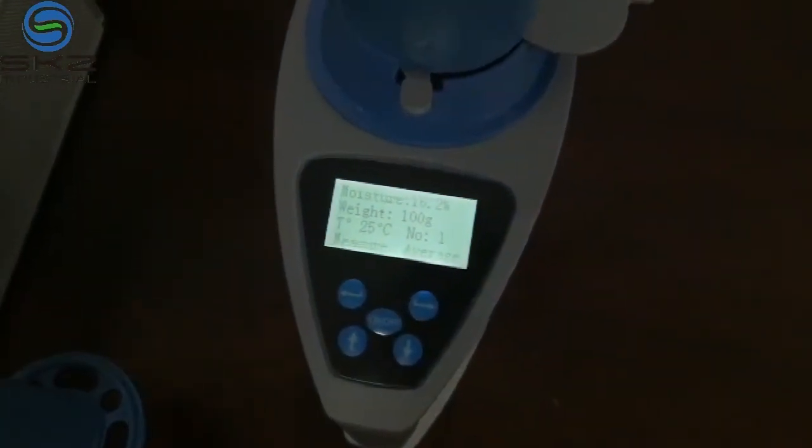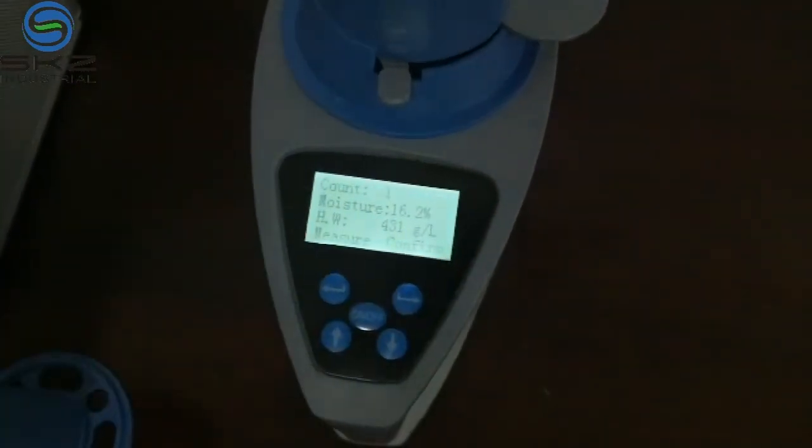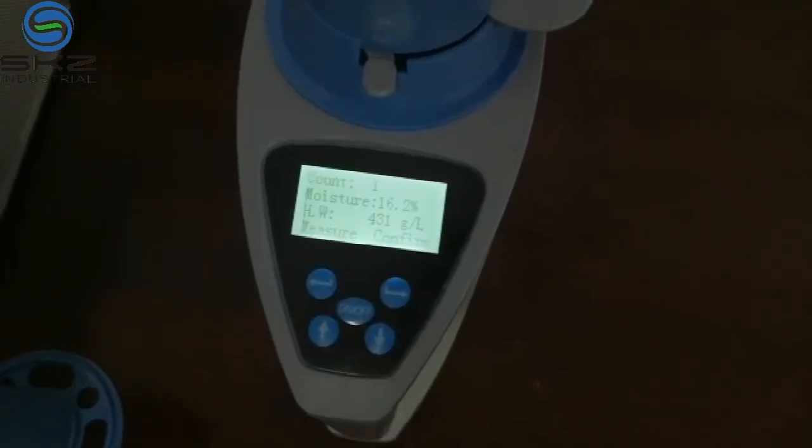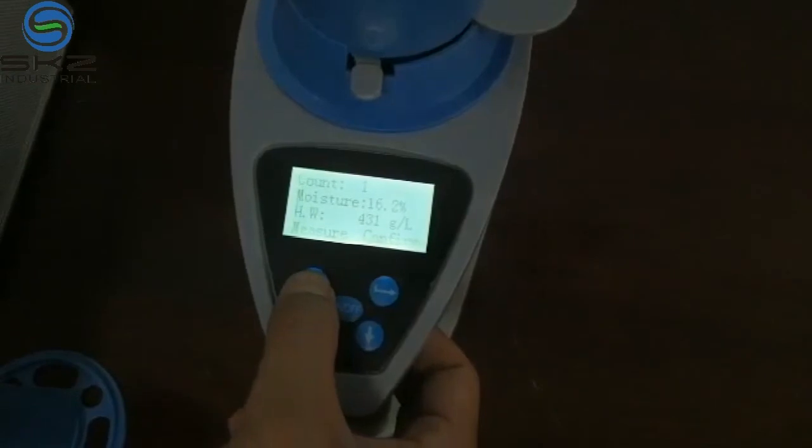For example, if you want to test several groups, you can press average. Then it will show the average and other information like individual weight. Thank you.